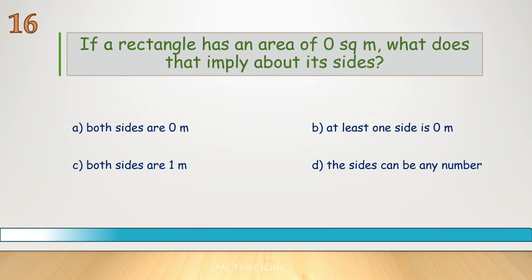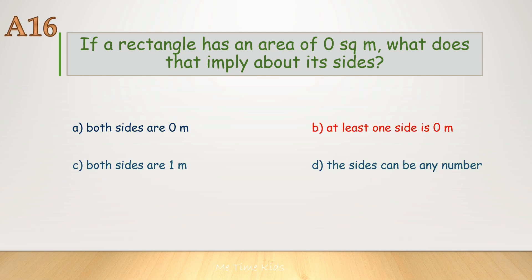If a rectangle has an area of 0 square meters, what does that imply about its sides? Correct answer is B, at least one side is 0 meters.